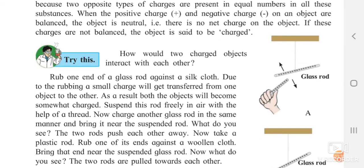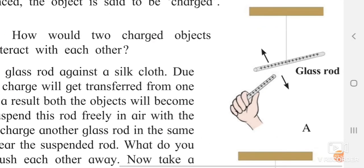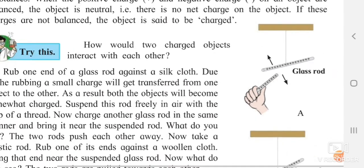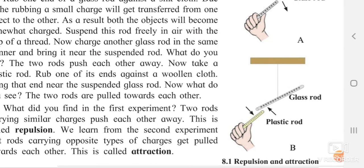How do two charged objects interact with each other? If you take one glass rod with positive charges and another glass rod also with positive charges, always remember: when two charges of the same type — two positive or two negative — come together, they always repel each other, just like the north pole of a magnet repels another north pole. However, if you take one negative and one positive charge, the two rods will come together — there will be attraction between them.